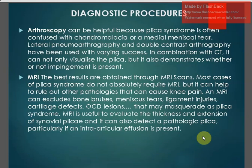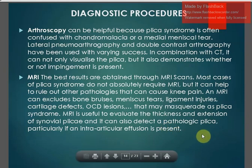Lateral pneumoarthrography and double contrast arthrography have been used in varying cases. In combination with CT, these can not only visualize the plica but also demonstrate whether impingement is present. MRI is another investigation where the best results are obtained — most cases of plica syndrome do not absolutely require MRI, but it can help rule out other pathologies. An MRI excludes bone bruises, meniscal tears, ligament injuries, cartilage defects, and OCD lesions. MRI is useful to evaluate the thickness and extension of the synovial plica and can detect a pathological plica, particularly if an intra-articular effusion is present.